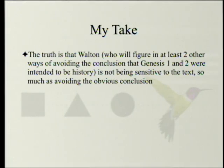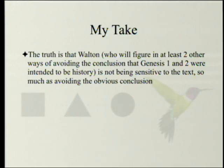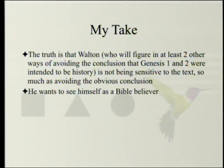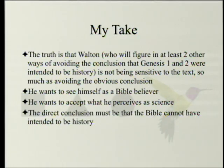The truth is that Walton — and there are others who follow him — will figure in at least two other ways of avoiding the conclusion that Genesis 1 and 2 were intended to be history. I don't think he's being sensitive to the text — at least not in the ways that count. He wants to see himself as a Bible believer, and he wants to accept what he perceives as science. And the direct conclusion is that the Bible cannot be intended to be history. So it must have some other function, and he's looking for all the other functions he can find.